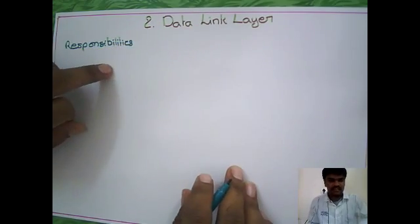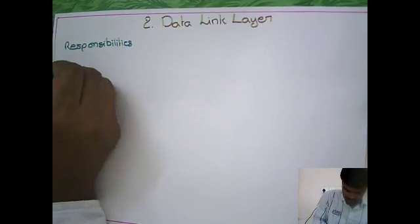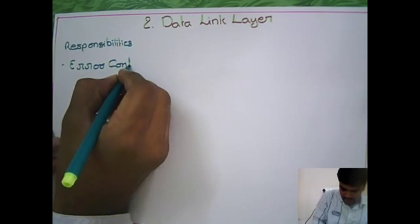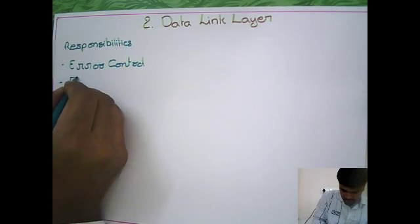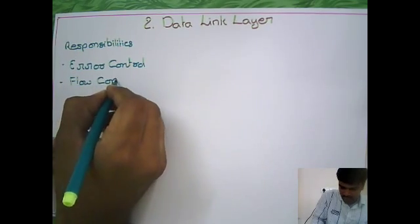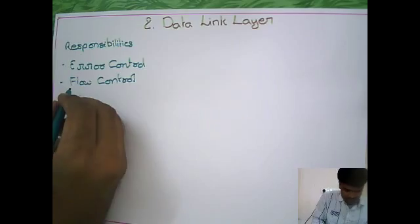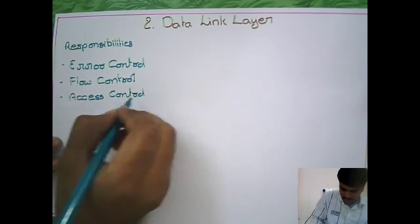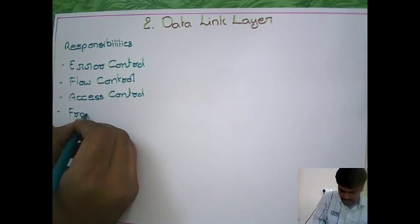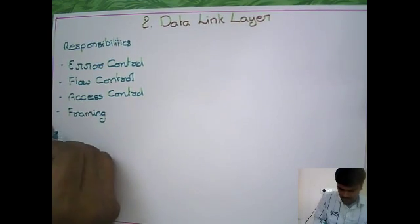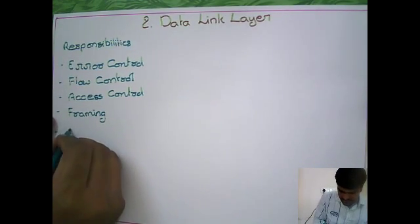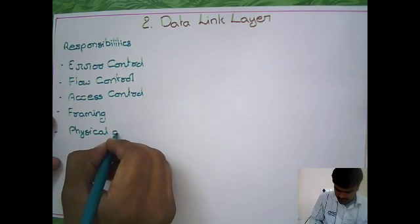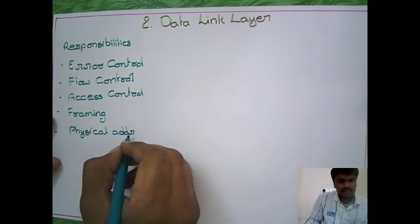What are the functionalities it has to perform? First is error control, second is flow control, third is access control, fourth is framing, and fifth is the physical addressing system, which is used locally and this address is a permanent address.